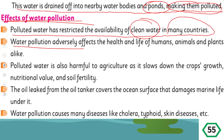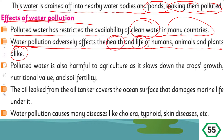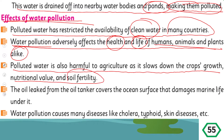Water pollution adversely affects the health and life of humans, animals and plants alike. Pollution has a very bad effect on the health and life of humans, animals and plants. Polluted water is also harmful to agriculture as it slows down crop growth, nutritional value and soil fertility. Ganda paani agar fasal ko lage toh crops ka nutritional value effectively reduce ho jaata hai.